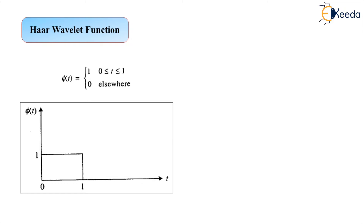We start with the topic titled Haar Wavelet function. From the previous 4 to 5 videos, I hope you are well familiar with the Haar Scaling function. Recalling back: the Haar Scaling function is denoted by Phi of t. Its mathematical representation gives an amplitude equal to 1 over the time interval 0 to 1. On the vertical axis, the marked amplitude level is 1, valid for the time interval 0 to 1.